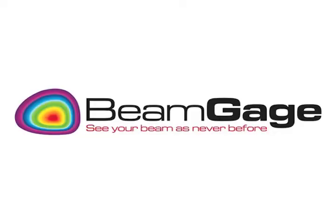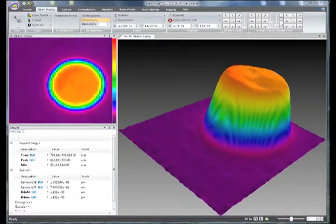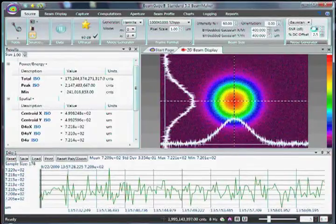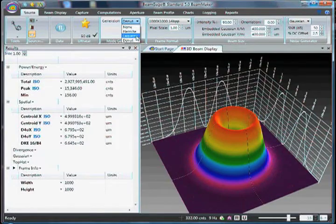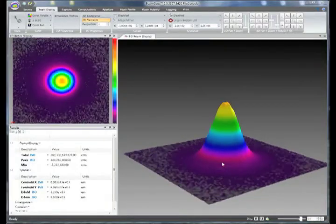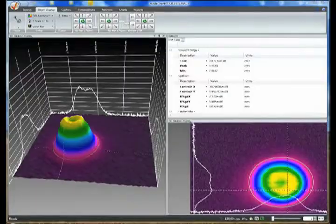Spiricon's next-generation BeamGage software combines real-time power and energy measurement with beam profile and the world's most advanced beam analysis software platform, and is the industry's first new-from-the-ground-up beam profile analysis instrument in 10 years.